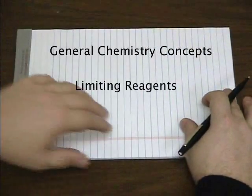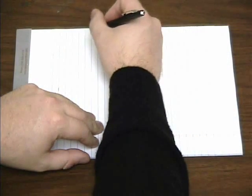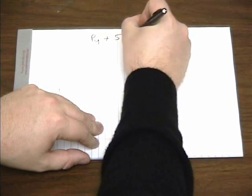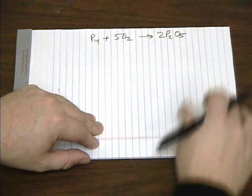Previously we introduced stoichiometry, and we're going to do a little bit more stoichiometry in this video. To start with, let's look at the reaction between phosphorus and oxygen to give you diphosphorus pentoxide.